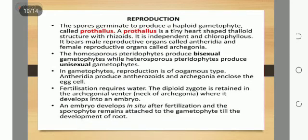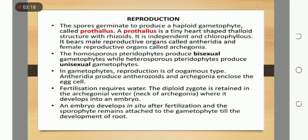Next is reproduction. The spores germinate to produce a haploid gametophyte called a prothallus. A prothallus is a tiny heart-shaped thaloid structure with rhizoids. It is independent and chlorophyllous. It bears male reproductive organs called antheridia and female reproductive organs called archegonia. Homosporous pteridophytes produce bisexual gametophytes while heterosporous pteridophytes produce unisexual gametophytes.